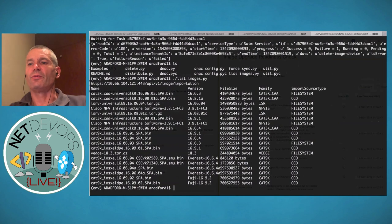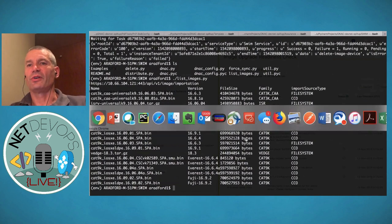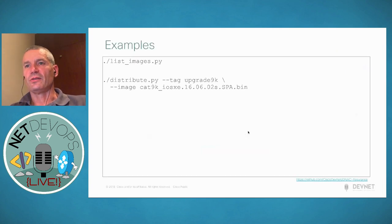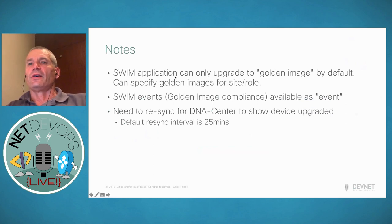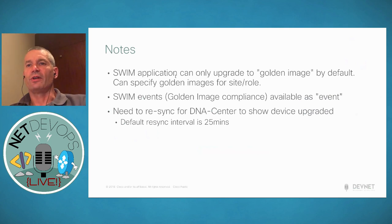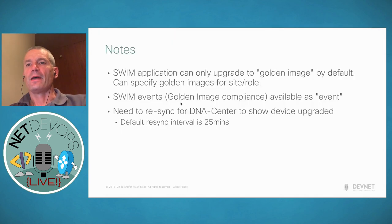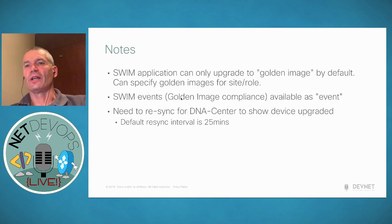Then I could activate the image if I want — I can do it in one shot, but normally the process is to push it out and then activate it. The SWIM application can only upgrade to the golden image by default, but with the APIs I can upgrade to whatever image I want — choose any one of these images, push it out to the device, and activate it. We're also working on a notification and event concept. There'll be another session covering the event framework and how you can get SWIM events pop out and handle those.